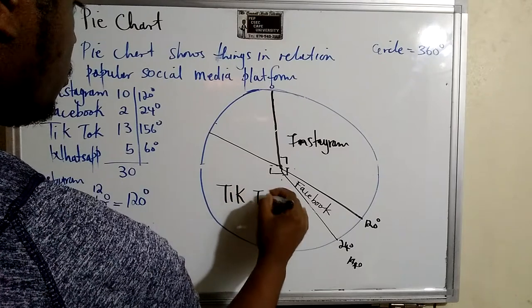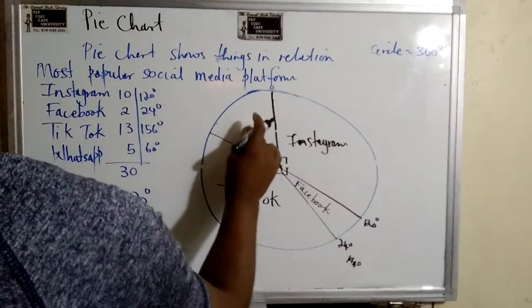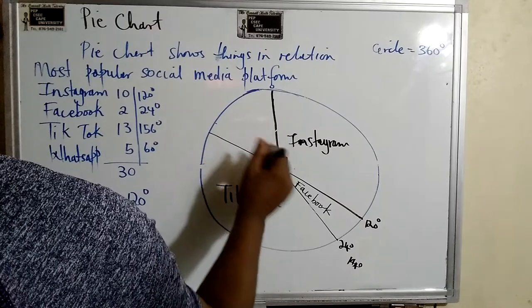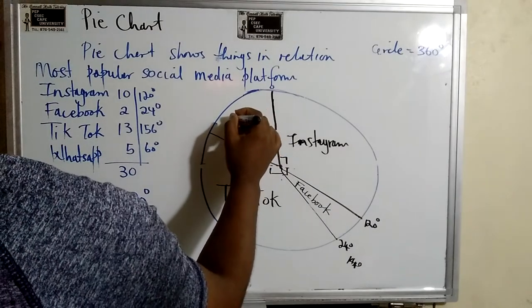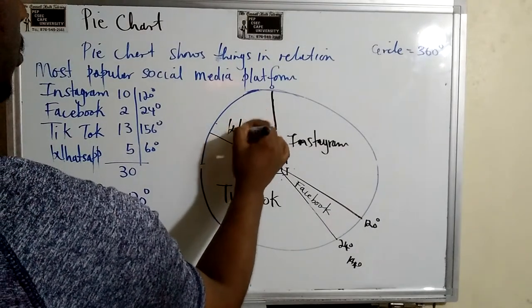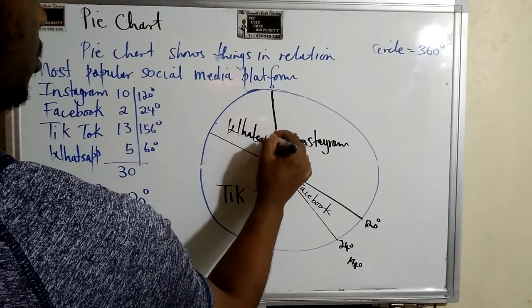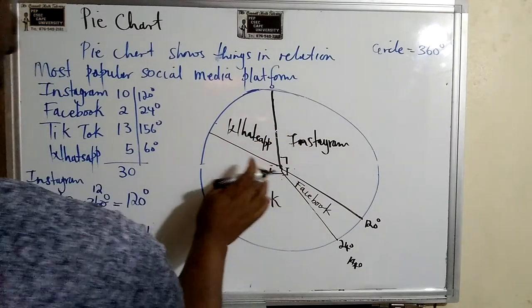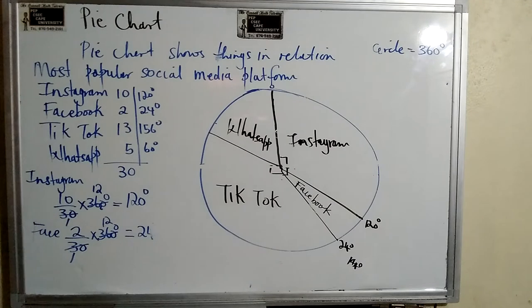And then the remainder would be 60 degrees, which is WhatsApp, right? So this is how you would have represented it on a pie chart.